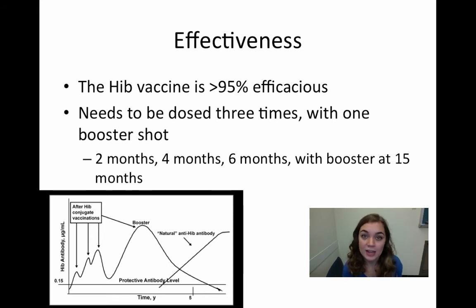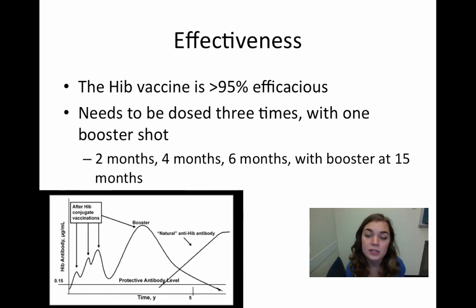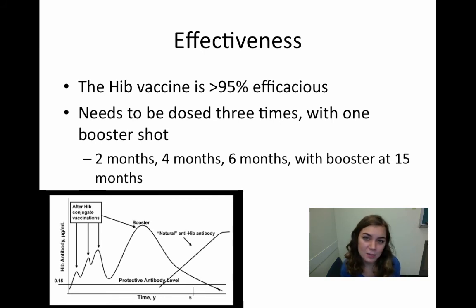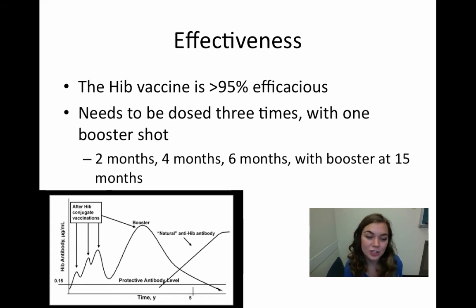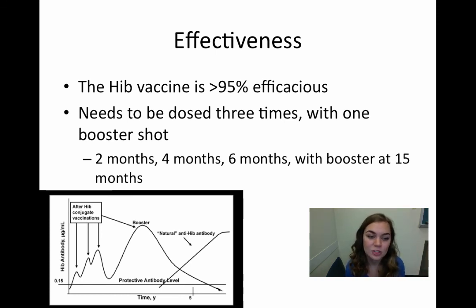These doses have to be given at a very young age and they have to be given often. It needs to be given three times with one booster shot — at two, four, and six months — with the booster shot at 15 months. The reason why this vaccine needs to be given at such a young age is because children under five cannot produce antibodies against Hib infections on their own. But after five years old, they naturally begin to produce these antibodies. So from zero to five years of age, this vaccine needs to be administered to increase the antibody count in these young vulnerable children. You can see this depicted in the graph at the bottom of the screen, which shows the antibody count compared to the age of the child.